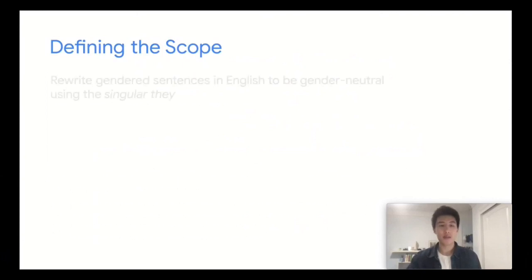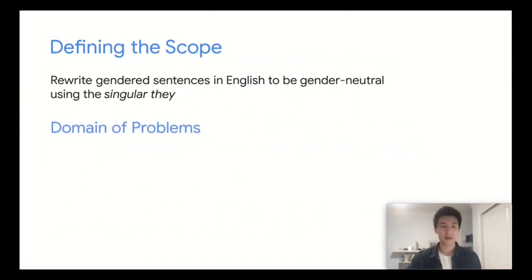To define the scope of the problem, we want to rewrite gendered sentences in English to be gender-neutral using the singular they. In particular, we want to focus on sentences with a single gendered entity, because a sentence with multiple entities and genders can have an ambiguous output.